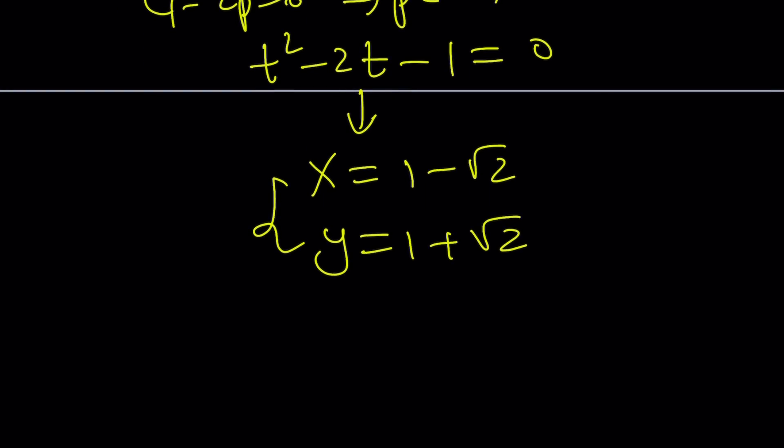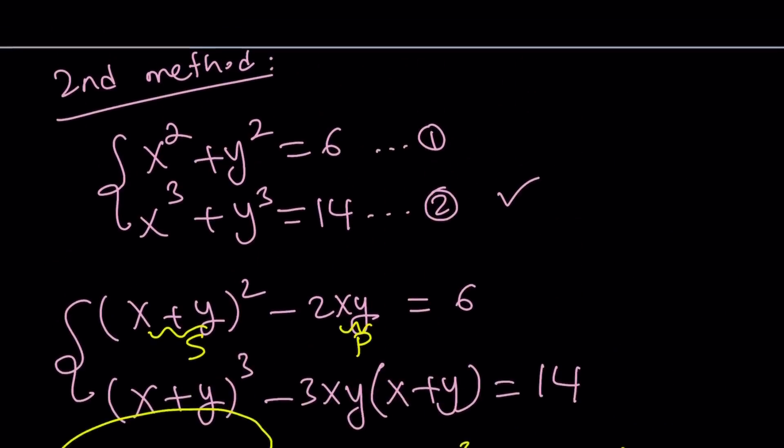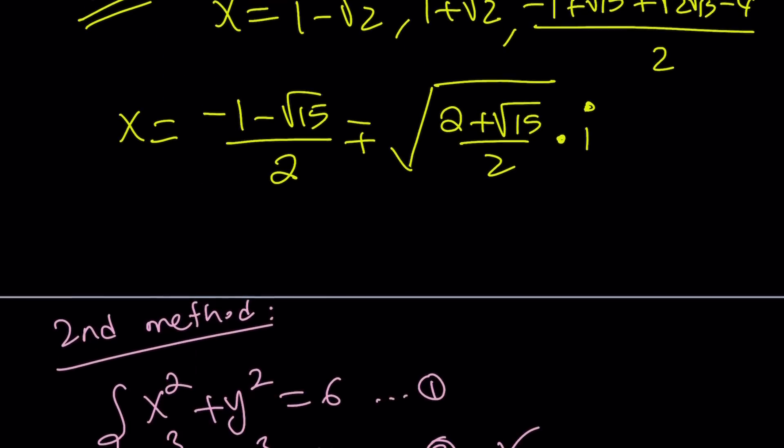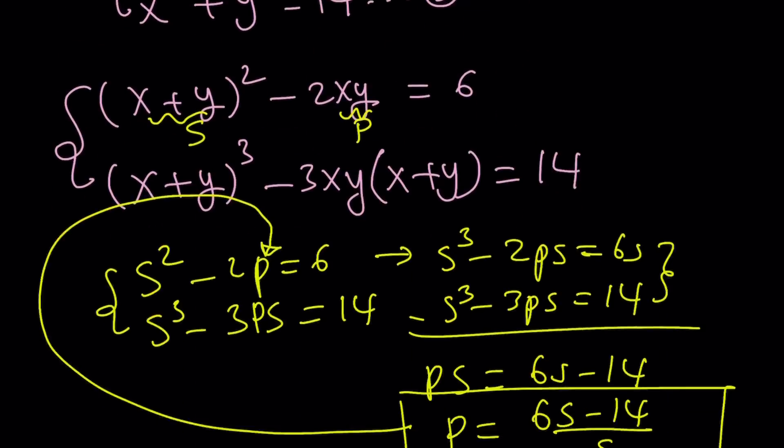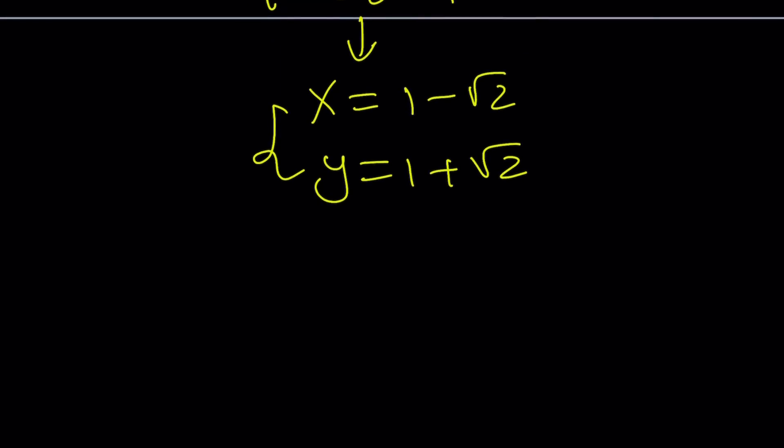That explains the x values that we found with Wolfram Alpha as 1 minus root 2 and 1 plus root 2. And the root 15, obviously, is going to show up. And the radical, the complex solutions, are going to be the result of the remaining quadratic after doing all these polynomial divisions. And this brings us to the end of this video.